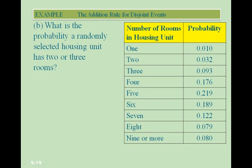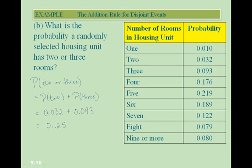Part B: what is the probability a randomly selected housing unit has 2 or 3 rooms? Since these are disjoint events, P(2 or 3) = P(2) + P(3). From the table, P(2 rooms) = 0.032 and P(3 rooms) = 0.093. Adding these together gives 0.125, which is the probability a randomly selected housing unit has 2 or 3 rooms.